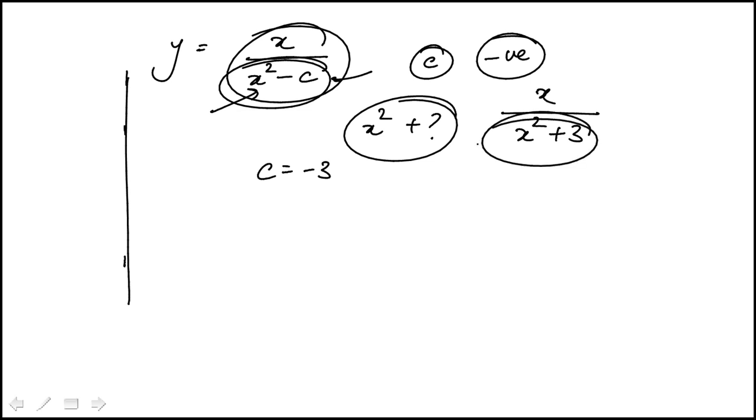The denominator would never be 0 because x squared is always positive and you're adding a positive number. So if c is a negative number, then it will not have any vertical asymptotes. That must be the scenario, so the answer is c.